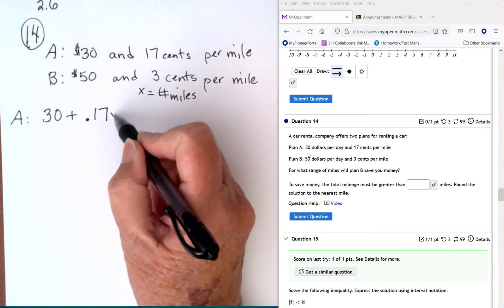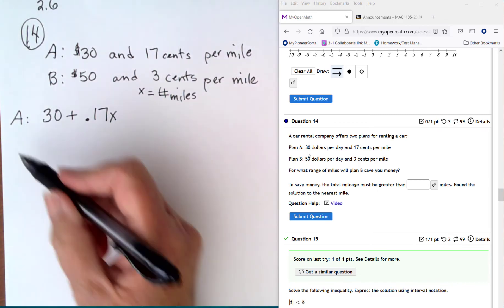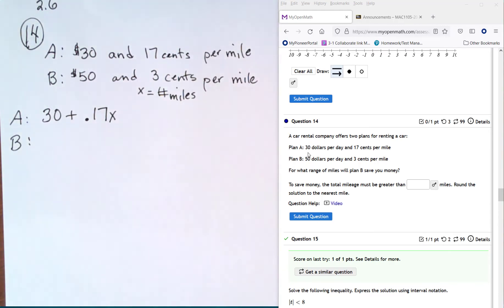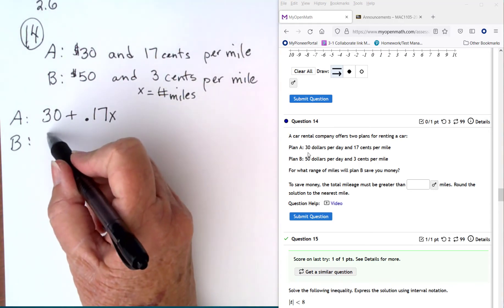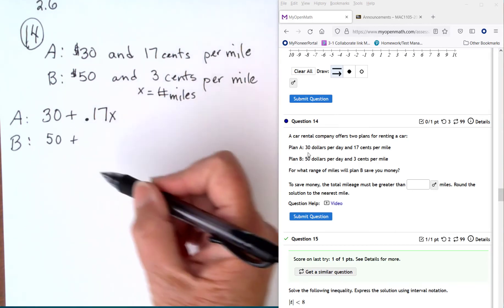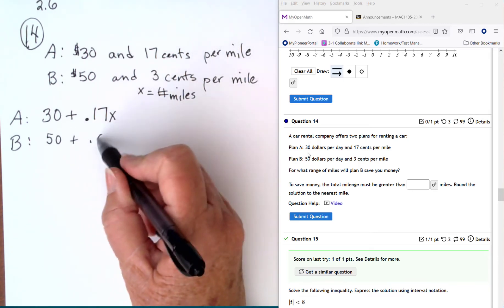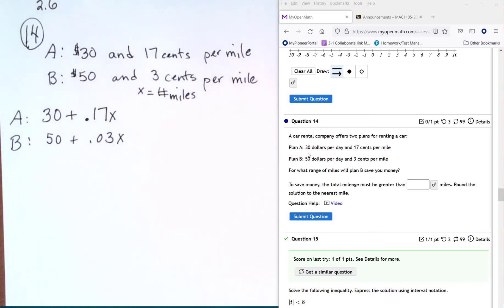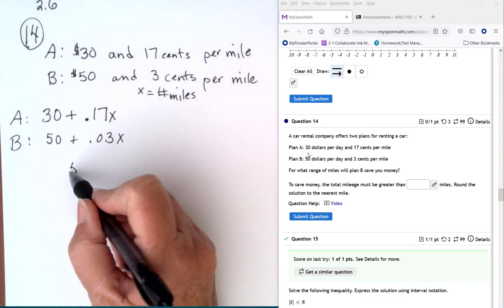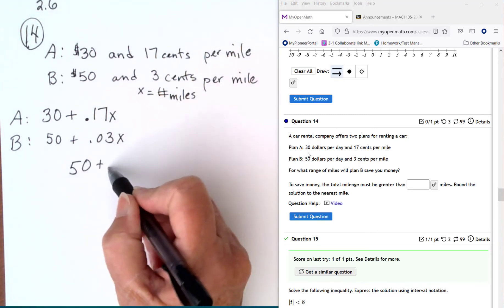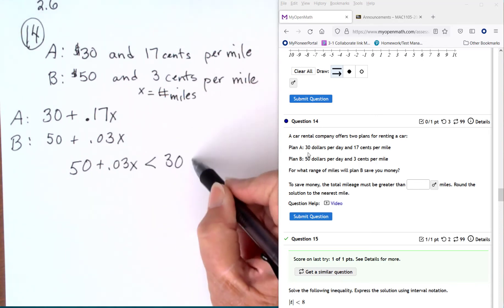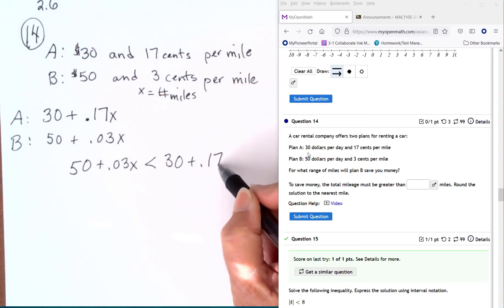So this is times the number of miles. Plan B will be $50 plus 3 cents per mile. So 0.03 times x. And we want B to be less than A. So 50 plus 0.03x is less than 30 plus 0.17x.